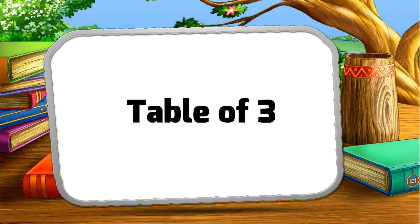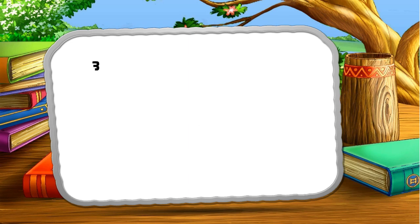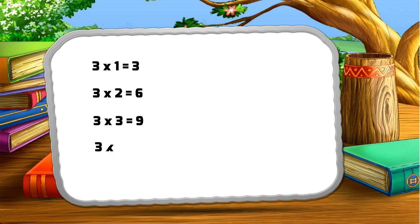Table of three. Three one za three, three two za six, three three za nine, three four za twelve, three five za fifteen, three six za eighteen.